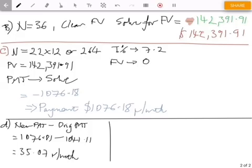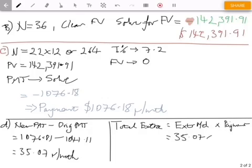And with that, the total extra paid is the extra each month multiplied by the number of payments. So we had an extra $35.07 times another 264 payments. So it's not the 25 years, it's the 22. And that comes out at an extra $9,258.48. So that's the extra that we're paying over the life of the loan.